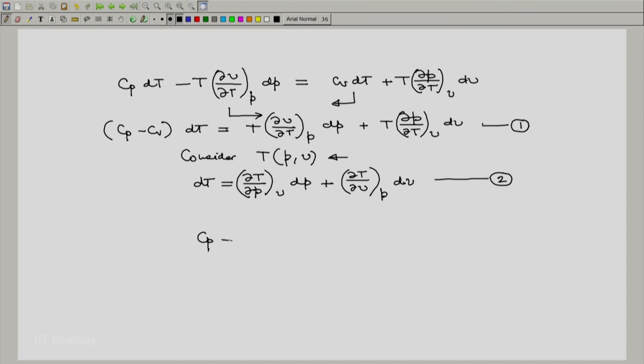And from that it is just one more step of calculus to obtain this relation which is CP minus CV equal to T partial of P with respect to T at constant V into partial of V with respect to T at constant P. So the intermediate steps I will leave it to you as homework. Thank you.